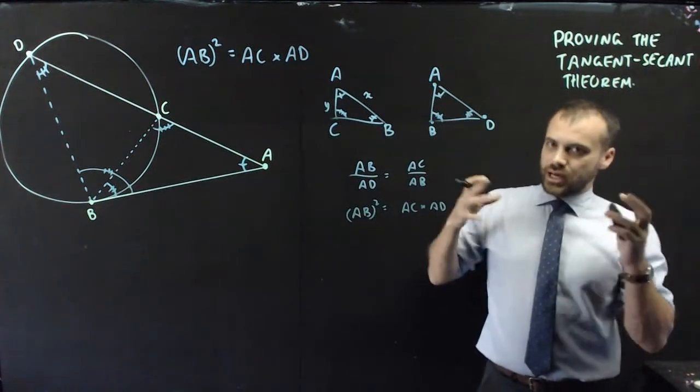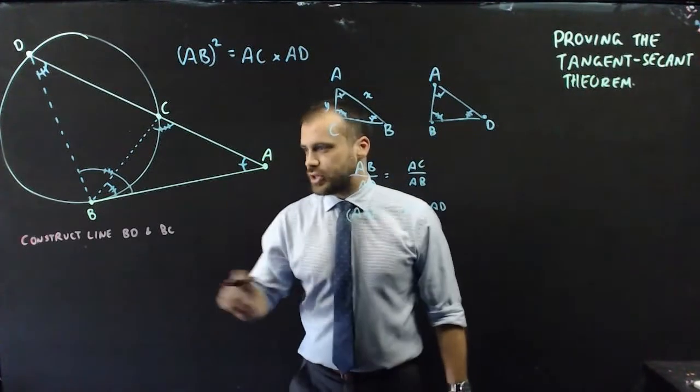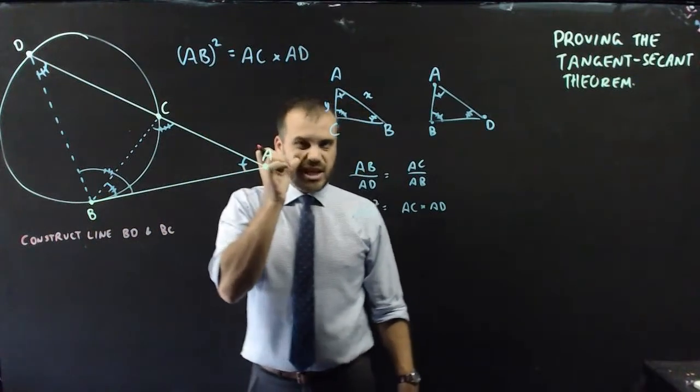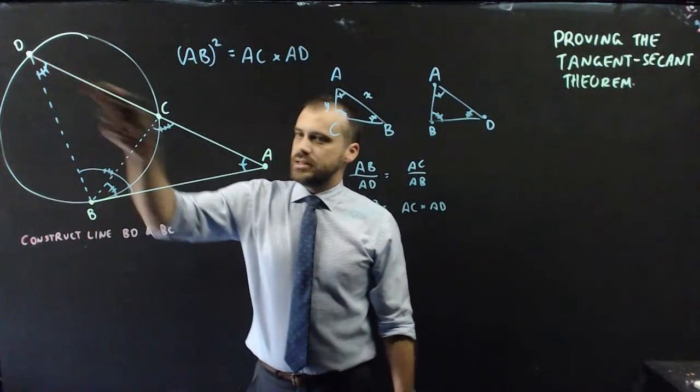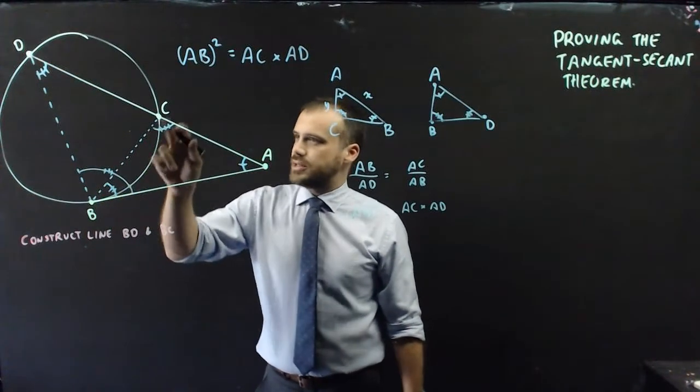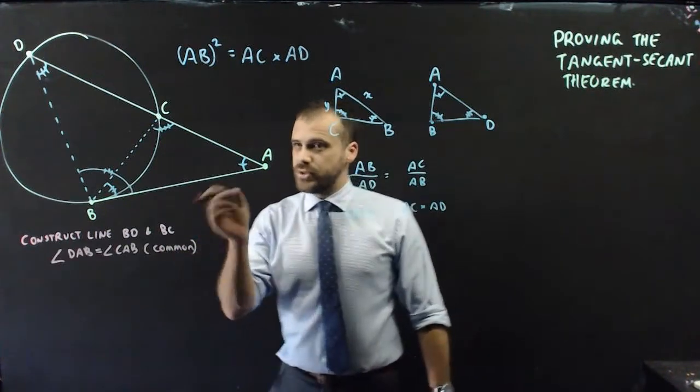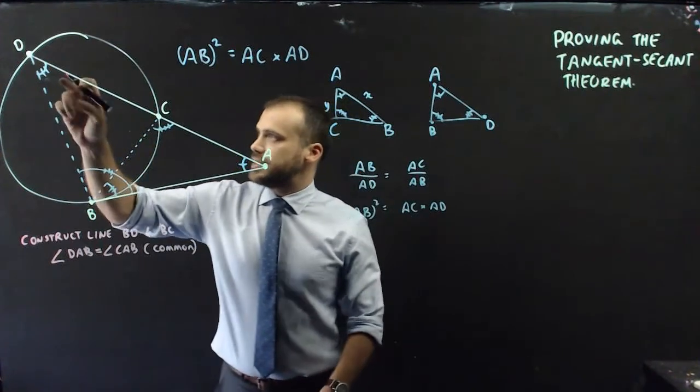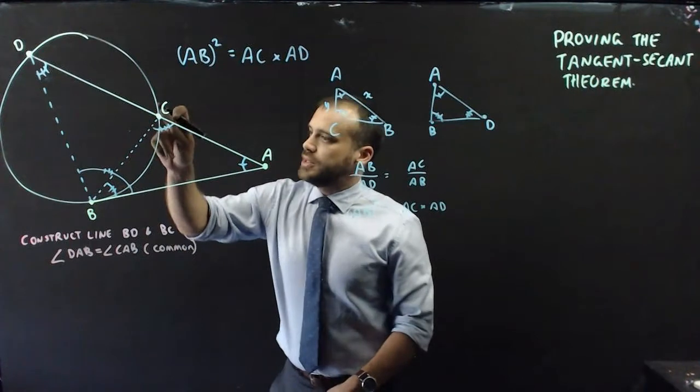Let's make sure that we formalize it. So my first step was constructing lines BD and BC. The next thing I did was start looking for equal angles, so I found one here: DAB and CAB are the same because they're common. So once we did that, we used our sneaky alternate segment theorem to say that this angle here, ADB, was equal to this angle here, CBA.